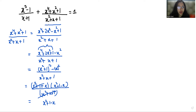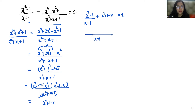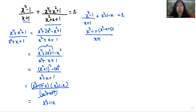Now let's substitute and add all terms. So we have x³ minus 1 by x plus 1, plus x² minus x plus 1, equals 1. If I take the LCM over x plus 1, the numerator becomes x³ minus 1 plus (x² minus x plus 1) times (x plus 1), all equals 1.